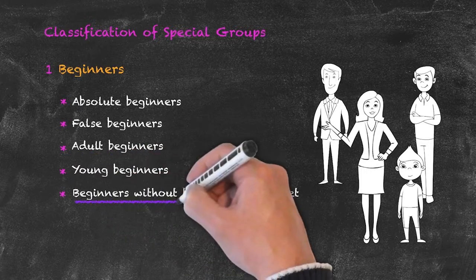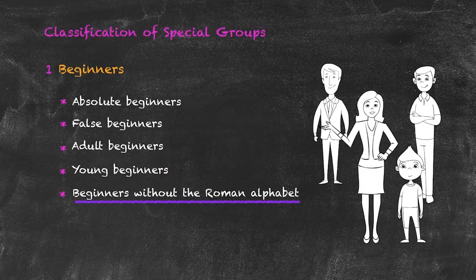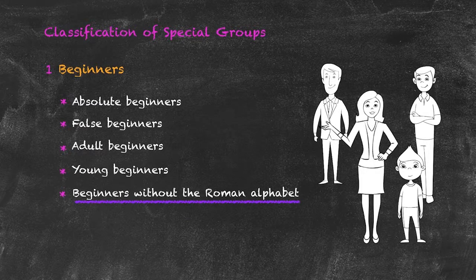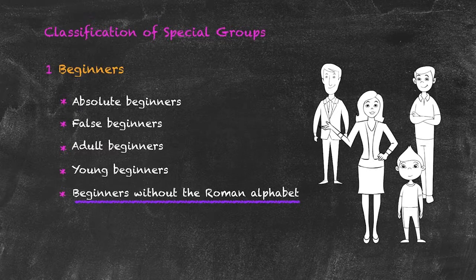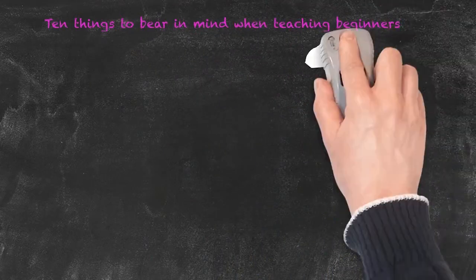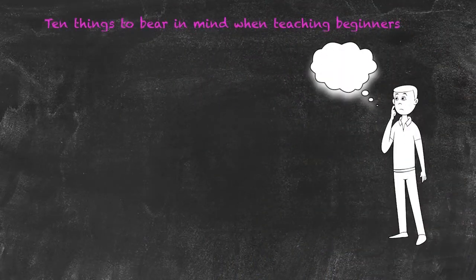Beginners without the Roman alphabet will need lessons that include very simple structures such as the alphabet itself. There are general rules that apply across all beginner subcategories, so here are the top 10 tips for teaching beginners.